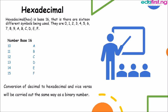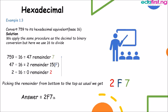Conversion of decimal to hexadecimal and vice versa will be carried out the same way as binary number. Now we have an example. To convert 759 to its hexadecimal equivalent, we apply the same procedure as decimal to binary conversion but here we use 16 to divide. Just take note, if you're converting from decimal to any other base, you use the base we are planning on converting to to divide.